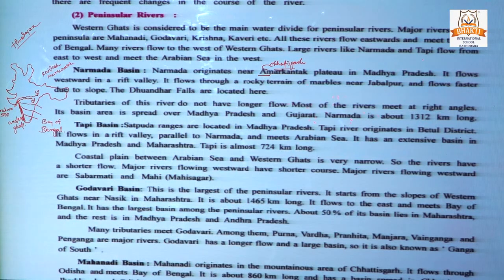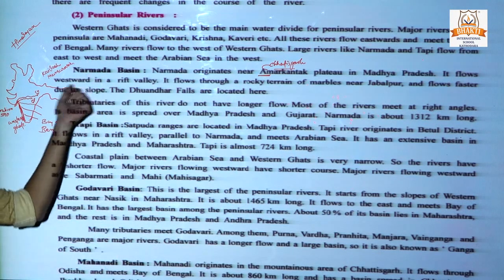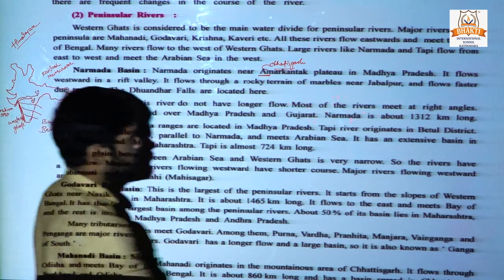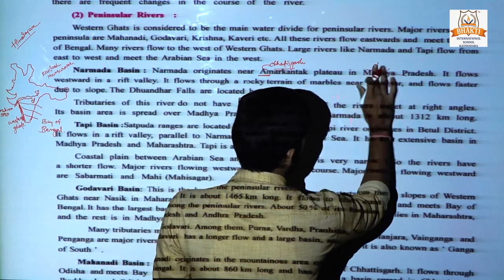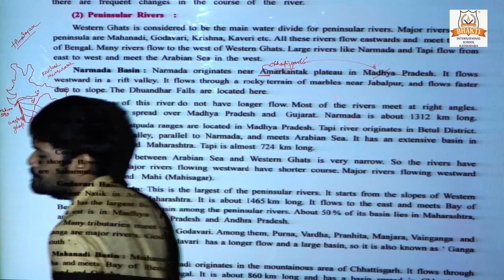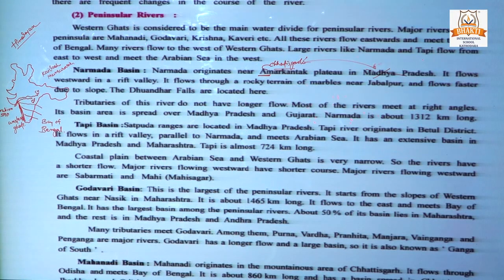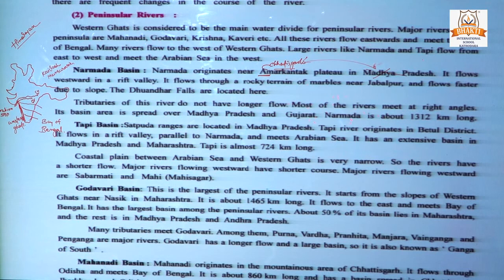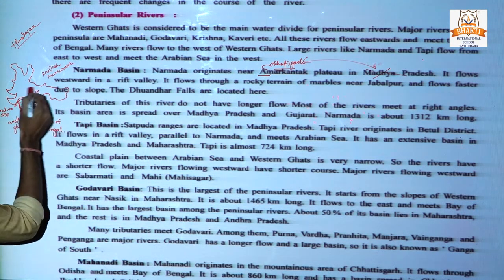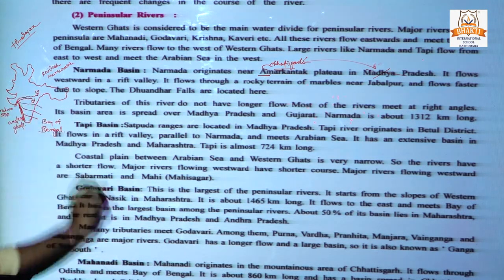Whenever you write about the Narmada Basin, correct Madhya Pradesh to Chhattisgarh. Narmada originated near Amarkantak plateau, Chhattisgarh. It flows westward in a rift valley, meaning it flows in a western direction through a rift valley.